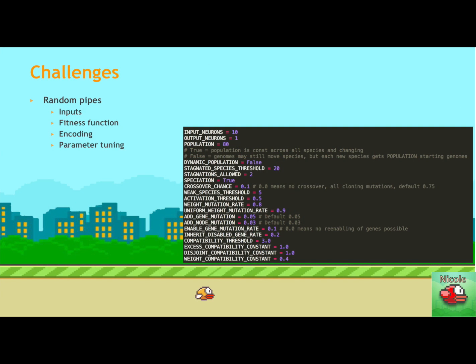So some challenges we encountered in implementing our project, again, were that we were not ultimately able to fully solve random pipes using NEAT, and this could be a combination of many different things, including not having the correct inputs or fitness functions, or we just did not tune our parameters correctly. And you can see these on the right, and these are things like mutation rates and crossover chance and probability.